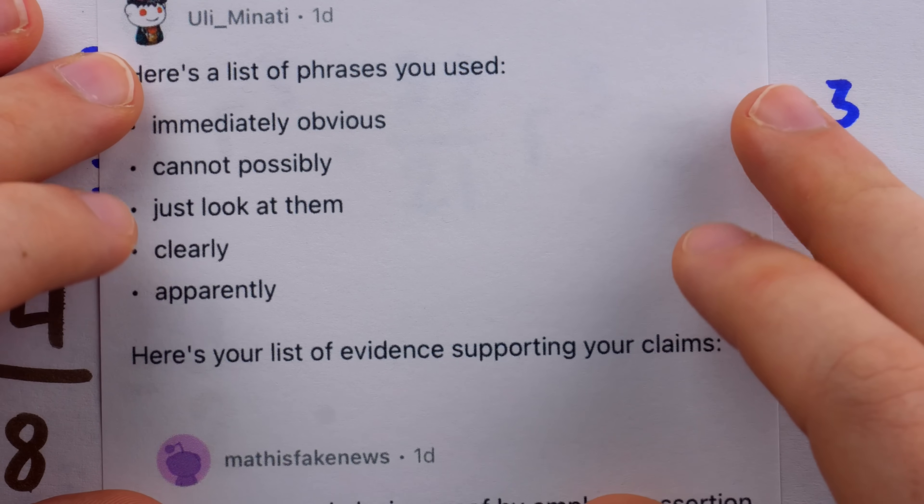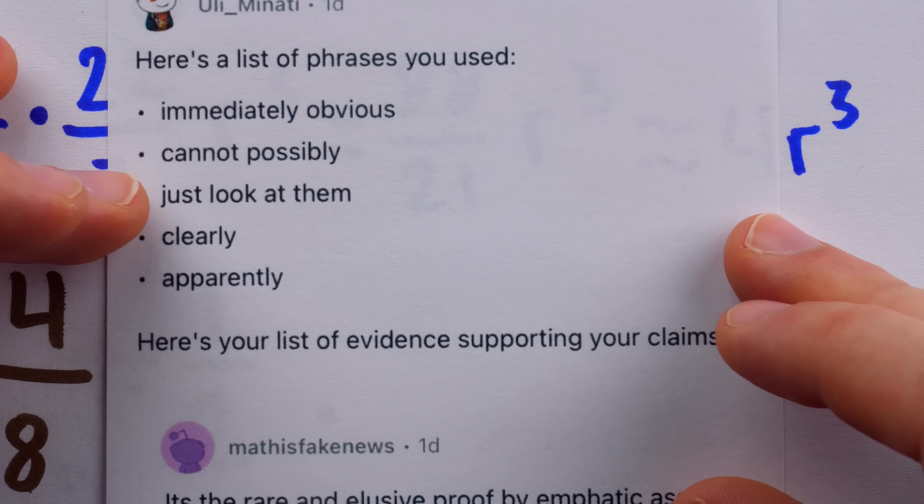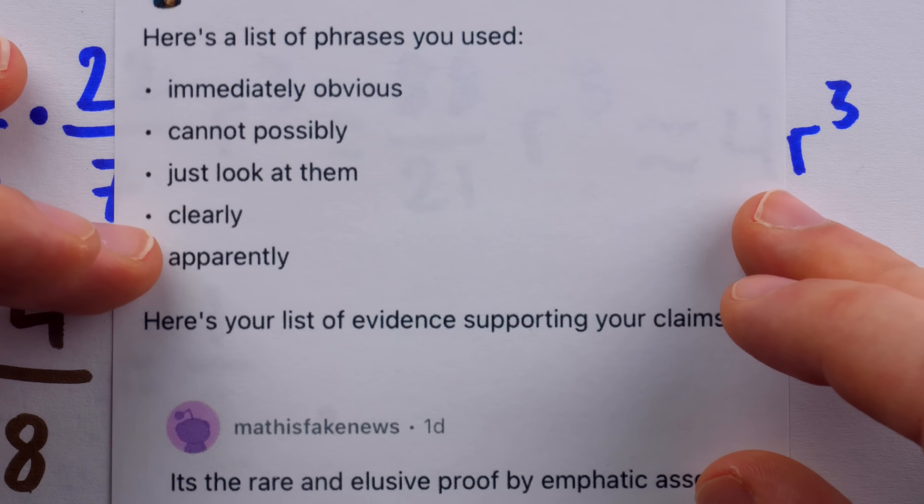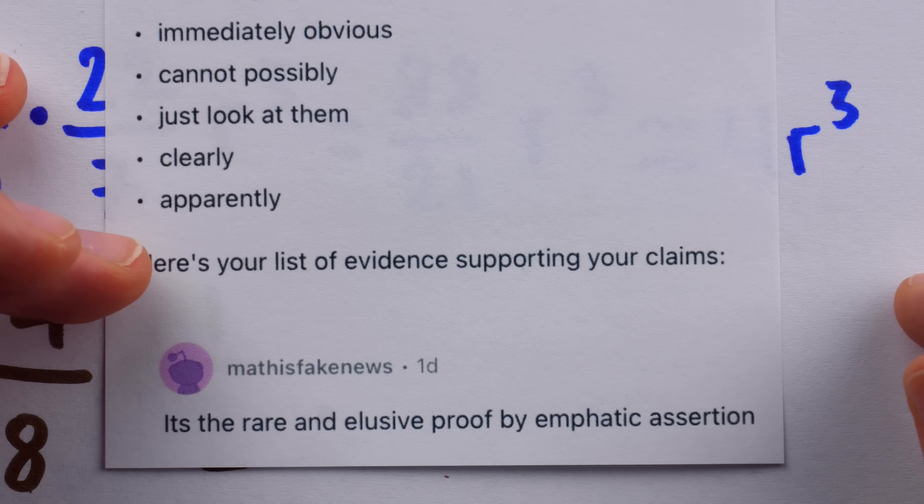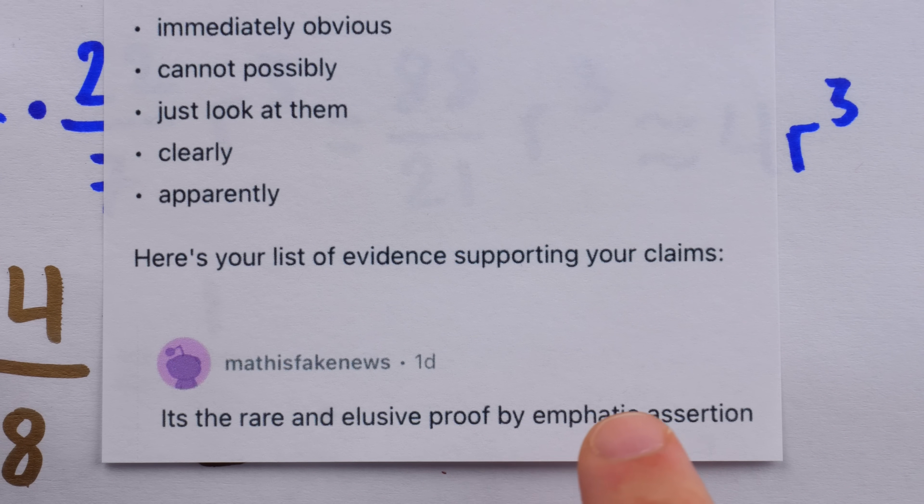My favorite comment is this one. Here's a list of phrases you used: Immediately obvious. Cannot possibly. Just look at them. Clearly. Apparently. Here's your list of evidence. And of course there's nothing. It's the rare and elusive, proved by emphatic assertion. Okay, back to some math.